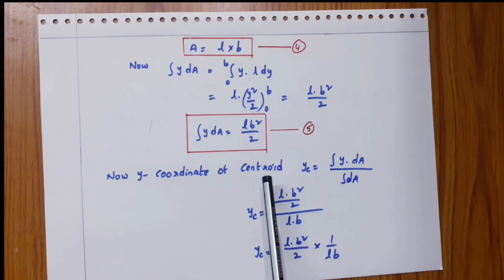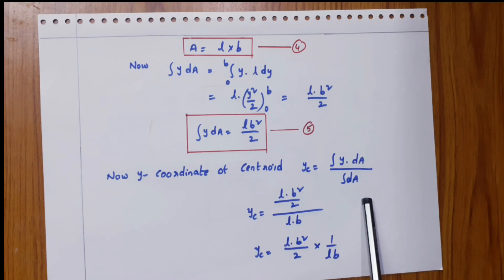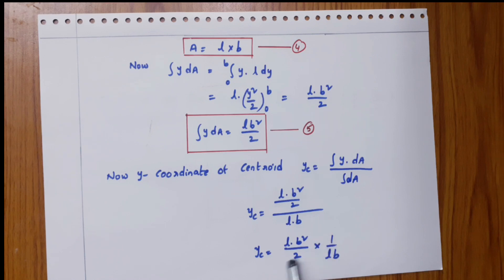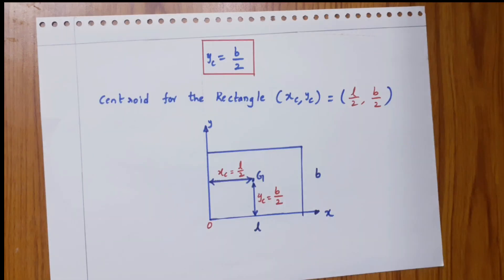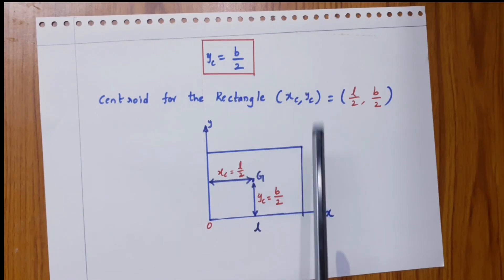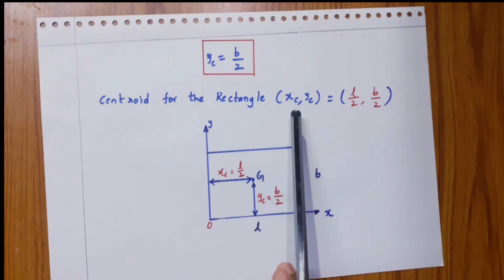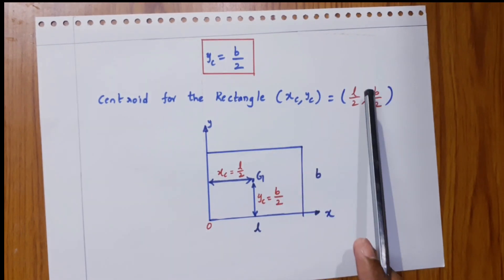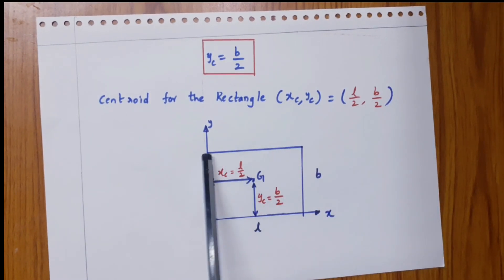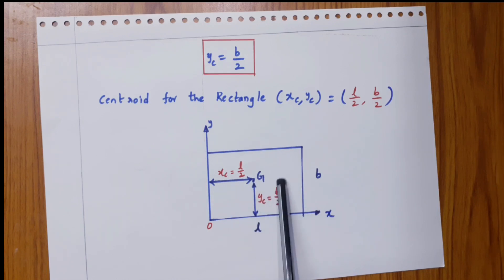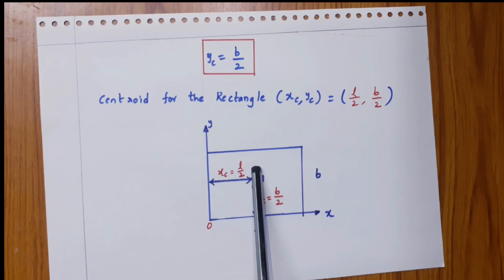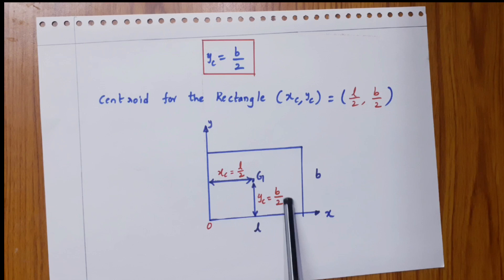Now, the y-coordinate of the centroid: yc equals integral y dA divided by integral dA. So, yc equals L B squared by 2 divided by L into B, which simplifies to yc equal to B by 2. Therefore, the centroid for the rectangle is at (xc, yc) equal to (L by 2, B by 2).